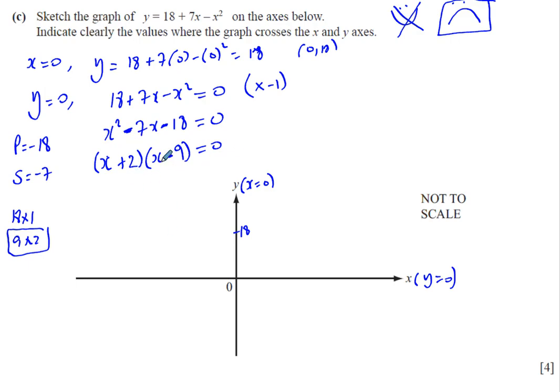So now we can say either x plus 2 is equal to 0, or x minus 9 is equal to 0. In which case, x is equal to negative 2, and x is equal to positive 9. So I know it's going to cross the x-axis at minus 2 and at 9. So that's enough information now for me to work out where it's going to cross the x-axis.